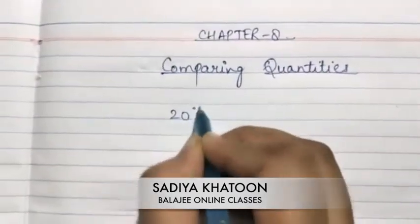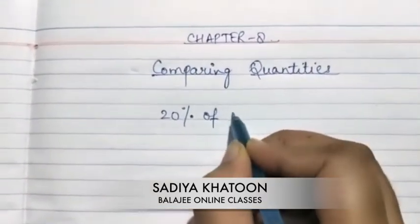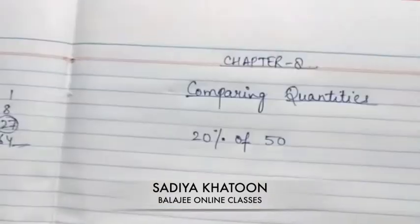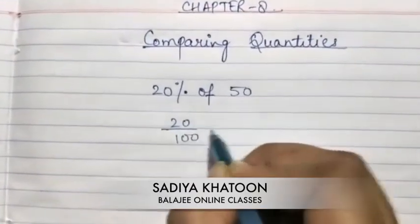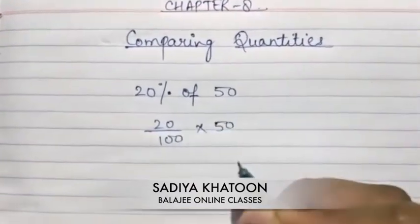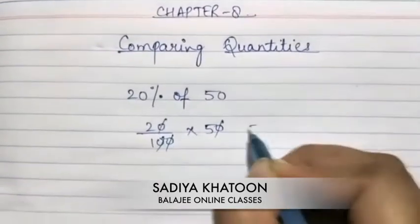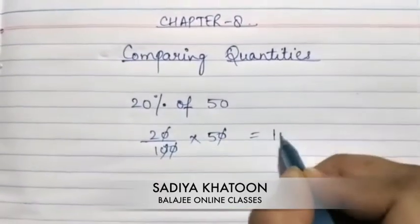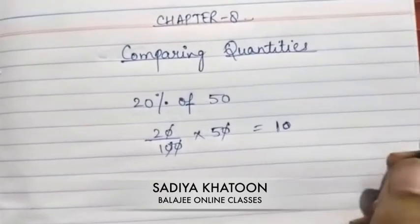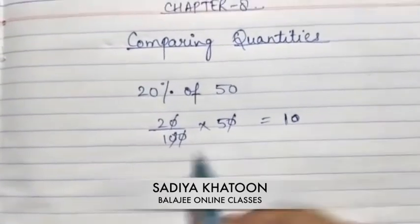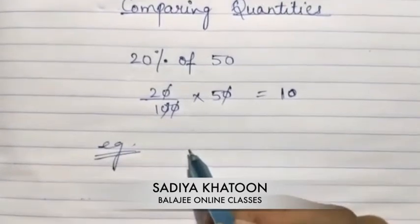Let's recall percentages. Suppose you have to find 20 percent of some number — like 20 percent of 50. So how are you going to calculate? It's 20 upon 100 into 50. You cancel here and get the value. This is how you calculate percentage.